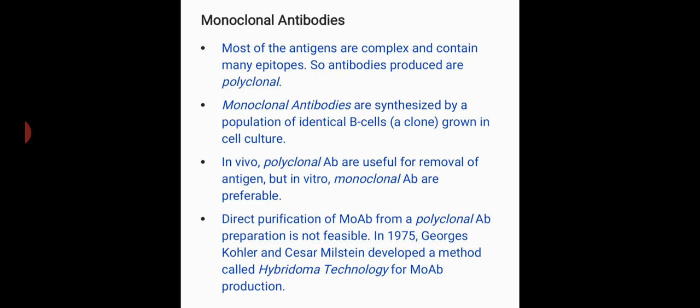Monoclonal antibodies and their applications. Most antigens have a complex structure with many different antigenic determinants, also known as epitopes. Therefore, antibodies produced in our body in response to these antigens are heterogeneous — antibodies specific to each of these epitopes are produced, and since they are produced by the clones of many different B lymphocytes, they are known as polyclonal antibodies.